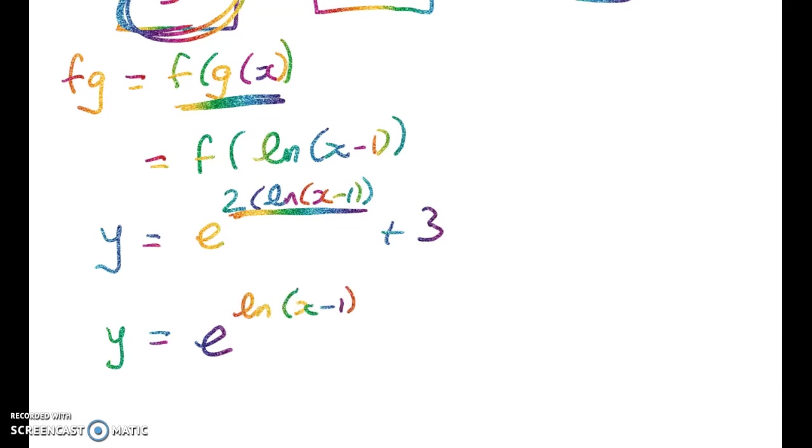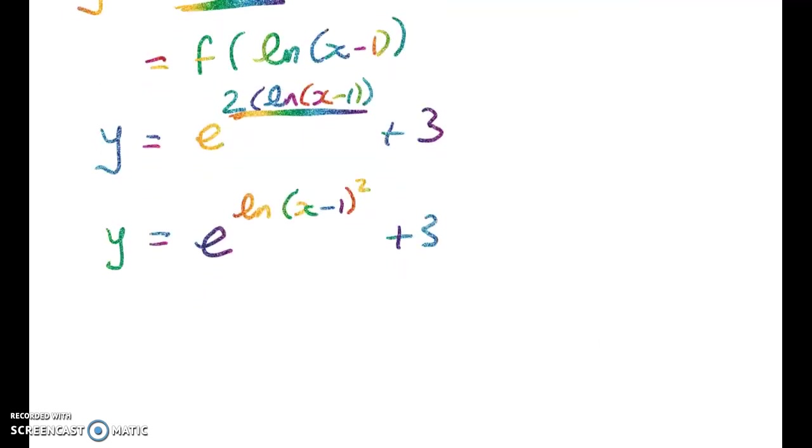...the natural log of (x minus 1) squared plus 3. And now we can take—what am I doing now? Well, these things are inverses. So e to the natural log of something is just equal to (x minus 1) squared plus 3. But we have to be really careful with this.